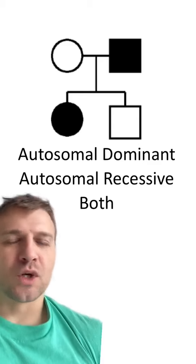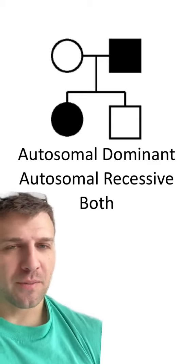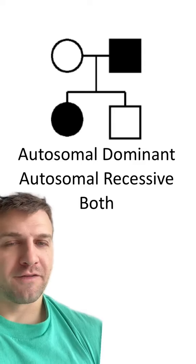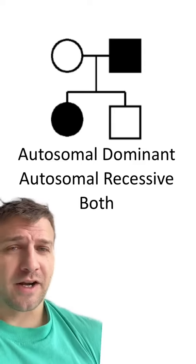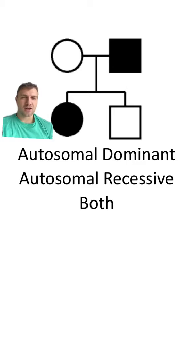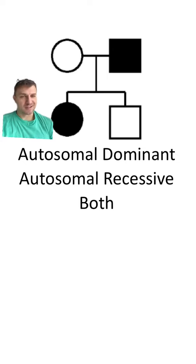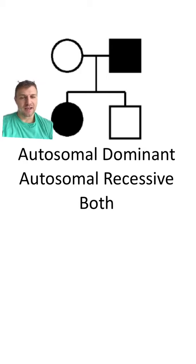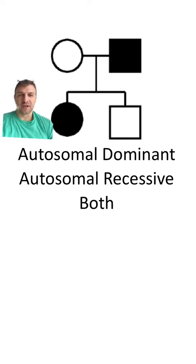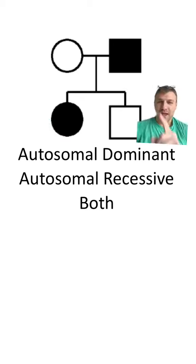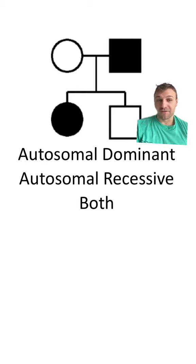Now let's take a look at this pedigree. Which type of inheritance pattern does this show? The father and daughter both are affected with this trait. This type of pedigree actually shows both. In an autosomal dominant inheritance, both the daughter and the father would have at least one big A — in this case they'd be heterozygous — because both the mother and the son would be little a little a, or homozygous recessive. That would mean the daughter would be heterozygous, since she would receive the big A from dad and the little a from mom. And the father would also be heterozygous, since this son received a little a from him.